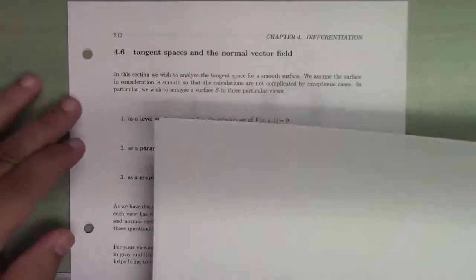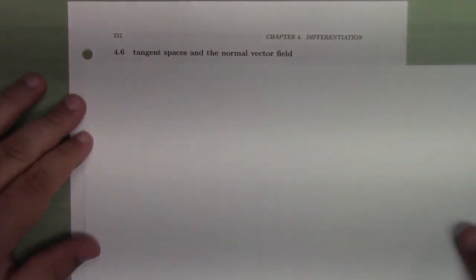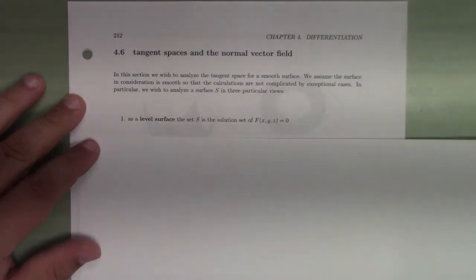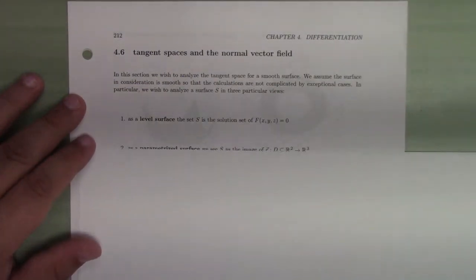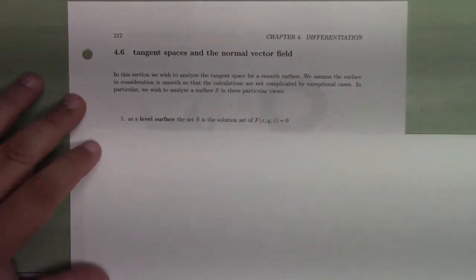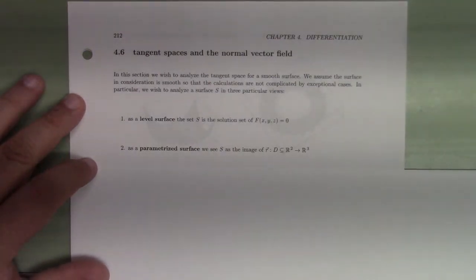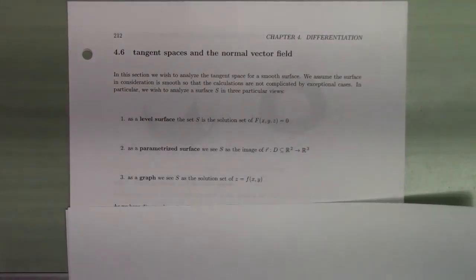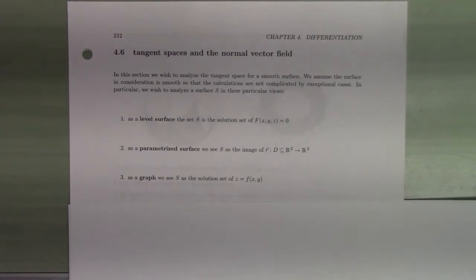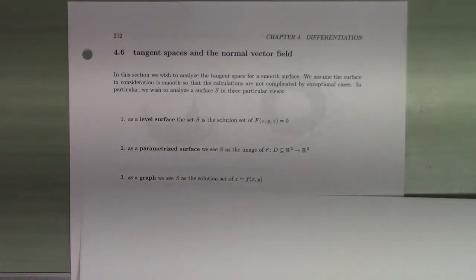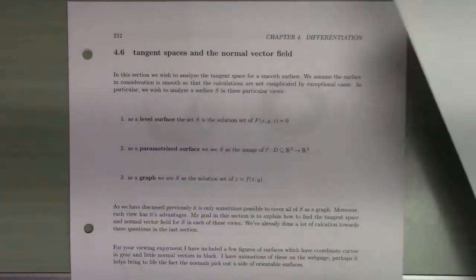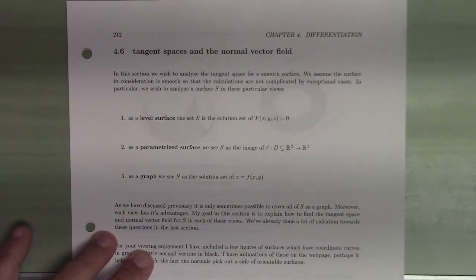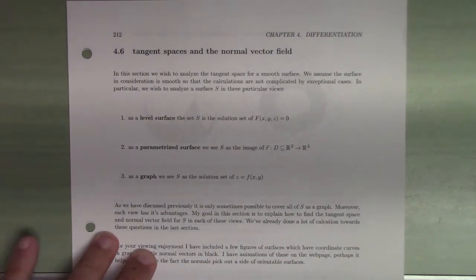The tangent space to a surface is a plane which kind of touches the surface and stays close to it. If we think about a surface in three dimensions, we have three basic ways to describe it: as a level surface, as a parametrized surface, and as a graph. These are not mutually exclusive viewpoints — there's a way of interchanging between them — and we want to figure out how to find the tangent plane for each.